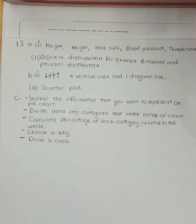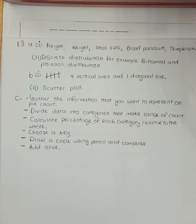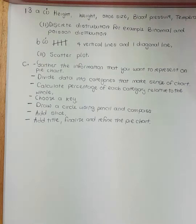Next, draw a circle using a compass to make it smooth. Then add slices to the pie chart — for example, if 60 out of 120 cars were white, 50% is represented on the chart. After that, add a title and finalize the pie chart — for example: 'A pie chart representing the colors of cars passing into the airport from 8 to 9 AM.' This was the complete solution of number 13.